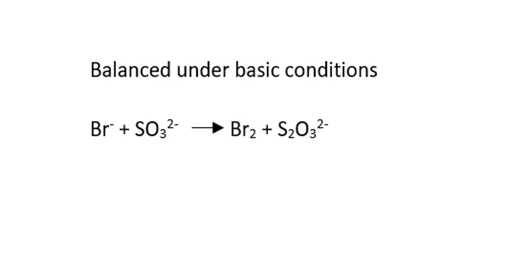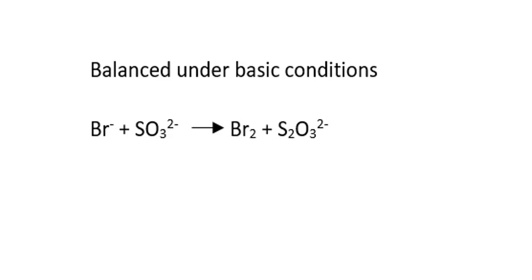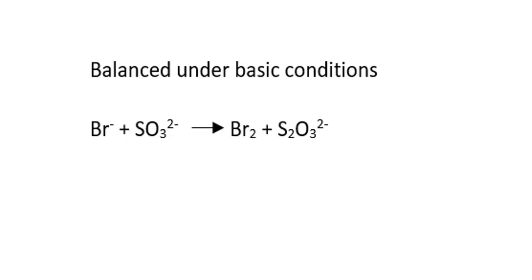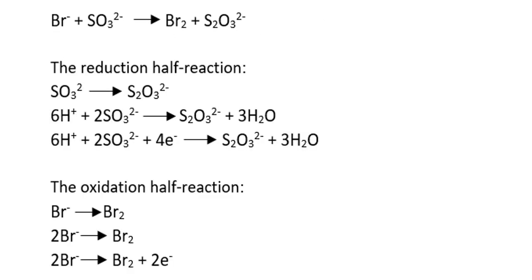Here we balance a reaction under basic conditions. Bromine on the left is in ionic form as bromide, and on the right it is in elemental form, Br₂. The bromide has therefore undergone oxidation, so the oxidation half reaction is bromide going to Br₂. The reduction half reaction is SO₃²⁻ becoming S₂O₃²⁻. On the left, one sulfur is bonded to three oxygens; on the right, two sulfurs are bonded to three oxygens. Therefore the sulfur has undergone reduction — the amount of oxygen bonded to it has been reduced.